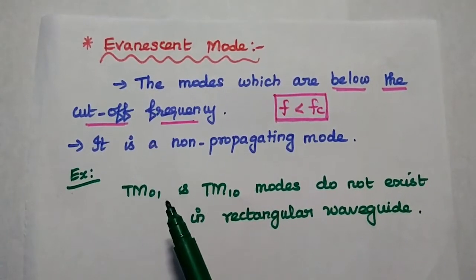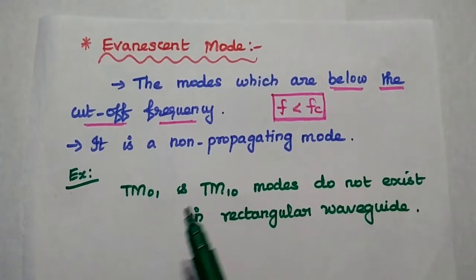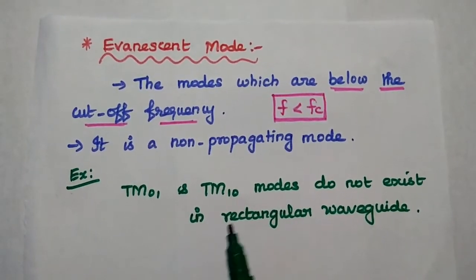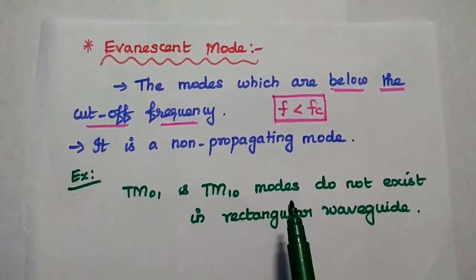For example, TM01 and TM10. These two modes do not exist in a rectangular waveguide.